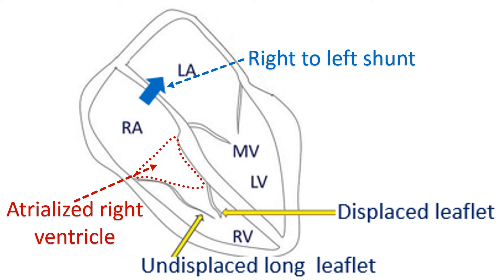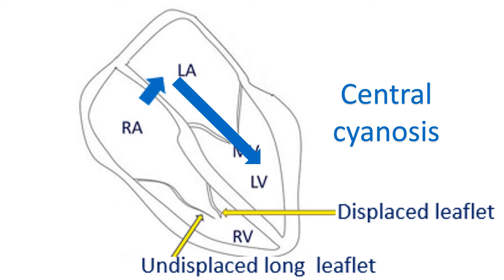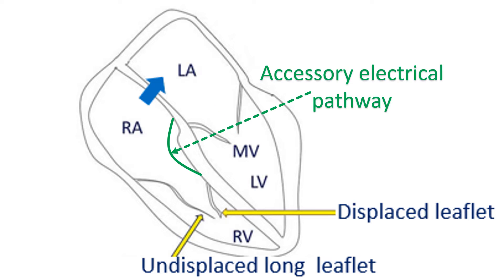Sometimes there is an associated atrial septal defect. As the pressure in the right atrium is usually higher than that in the left atrium in Epstein's anomaly, blood shunts from the right atrium to the left atrium. When the right atrial blood with lower oxygen saturation mixes with left atrial blood, the oxygen content of left atrial blood decreases. This blood flows into the left ventricle and is pumped out into the aorta, so systemic oxygen saturation drops and can manifest as central cyanosis in Epstein's anomaly.